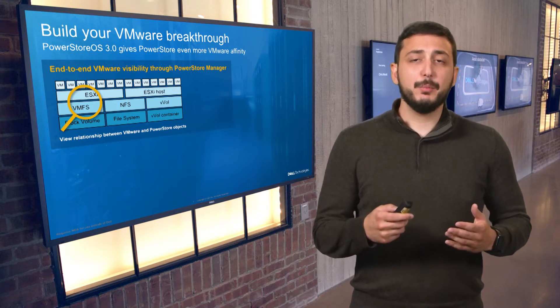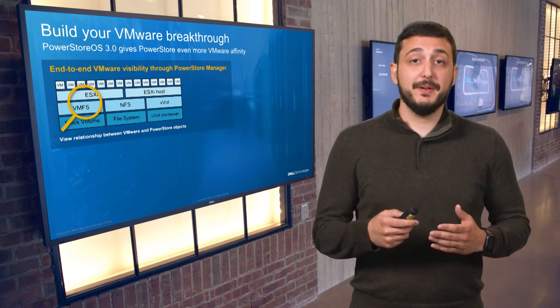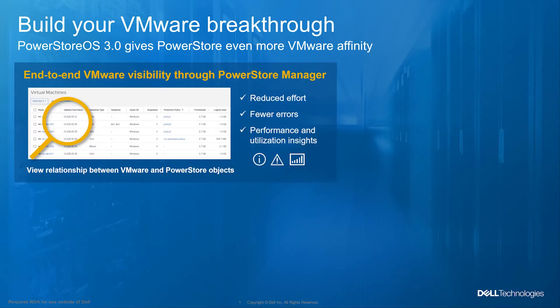PowerStore now provides info about VMs stored on VMFS, NFS, or VVOL data stores, and it works for VMs hosted on both external and internal storage. By letting users see these associations from a single interface, we reduce overall effort, eliminating possibility for error, and provide performance and utilization insights on how PowerStore storage is consumed in a vSphere environment, increasing overall efficiency and lowering costs.